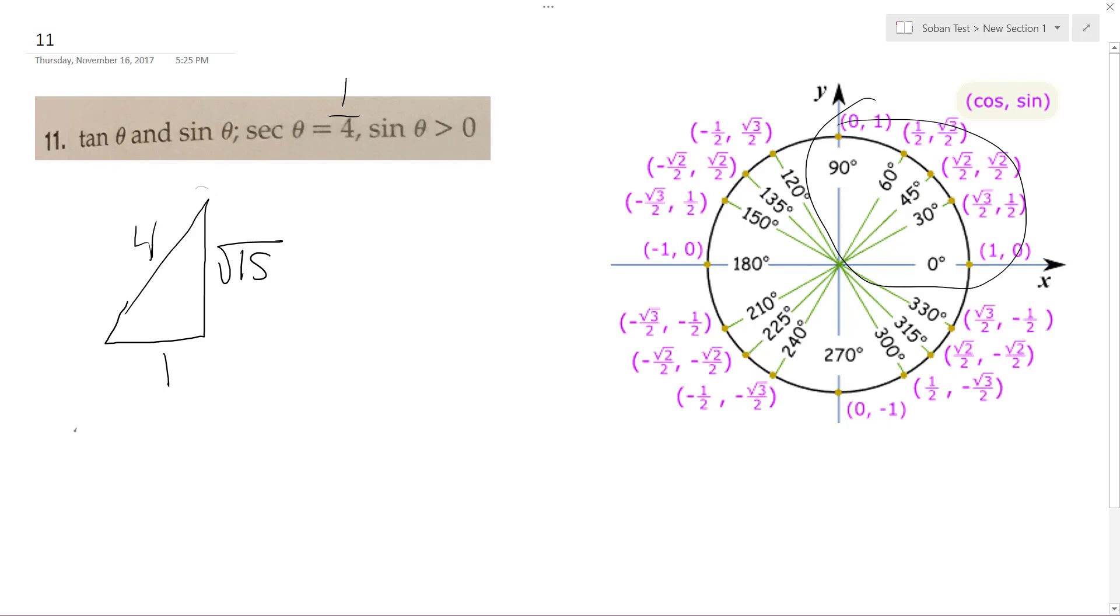So then we want to know the tangent. Tangent of theta is going to be root 15, it's opposite over adjacent, so root 15 over one, so just root 15 for simplicity. And sine of theta is going to be equal to opposite over adjacent, so it's just going to be root 15 over four.